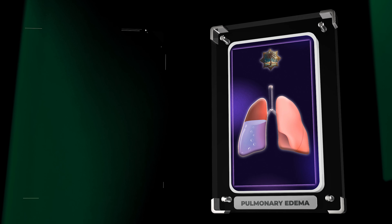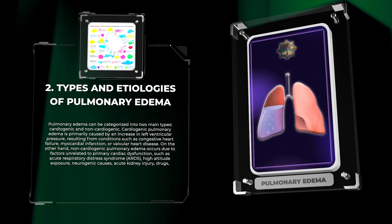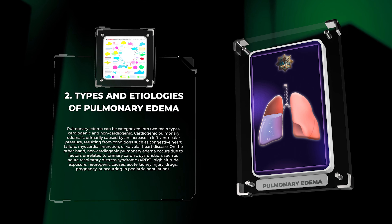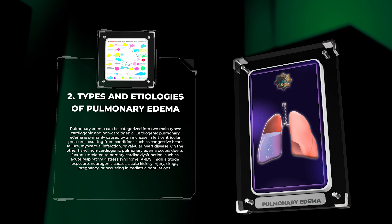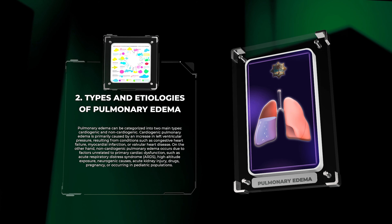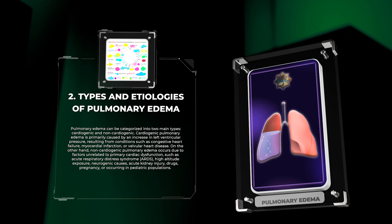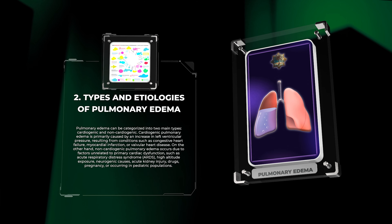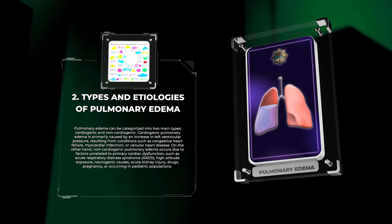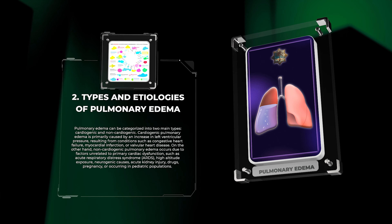Pulmonary edema can be categorized into two main types: cardiogenic and non-cardiogenic. Cardiogenic pulmonary edema is primarily caused by an increase in left ventricular pressure resulting from conditions such as congestive heart failure, myocardial infarction, or valvular heart disease. Non-cardiogenic pulmonary edema occurs due to factors unrelated to primary cardiac dysfunction.